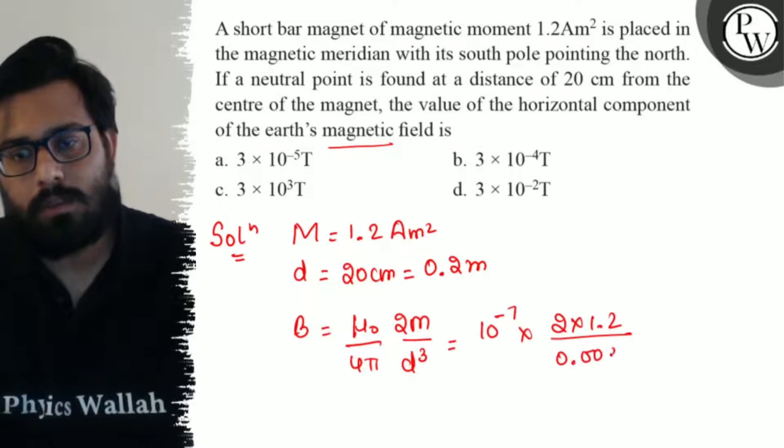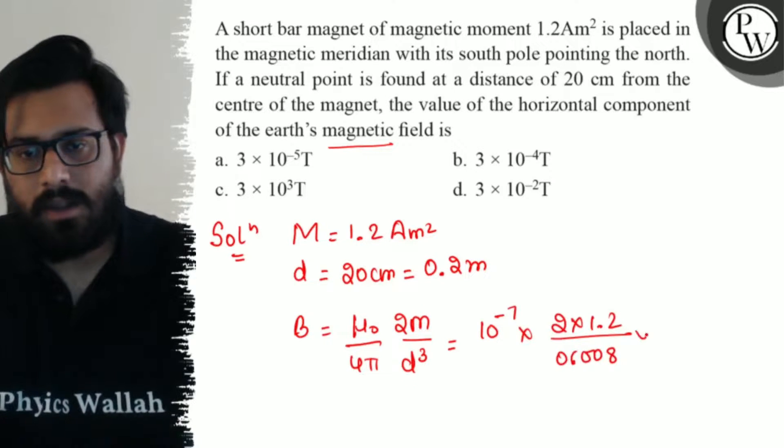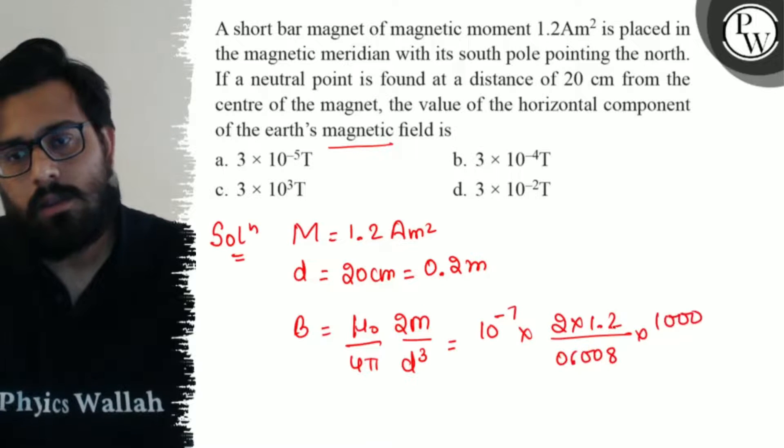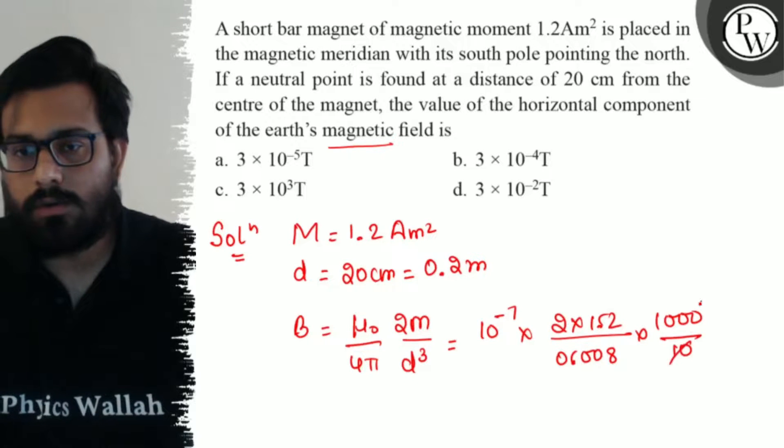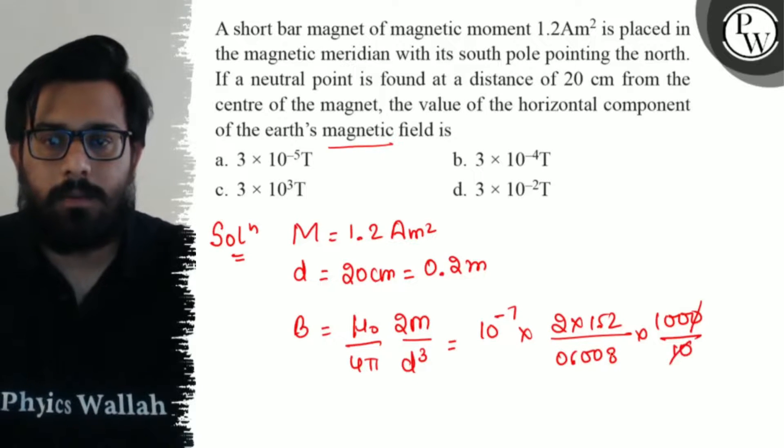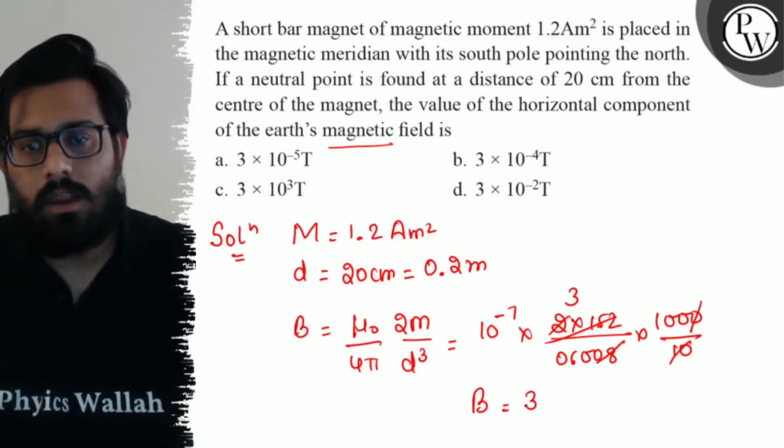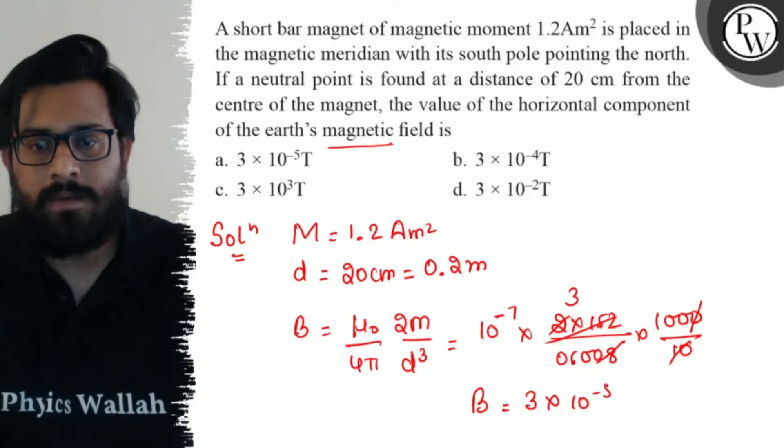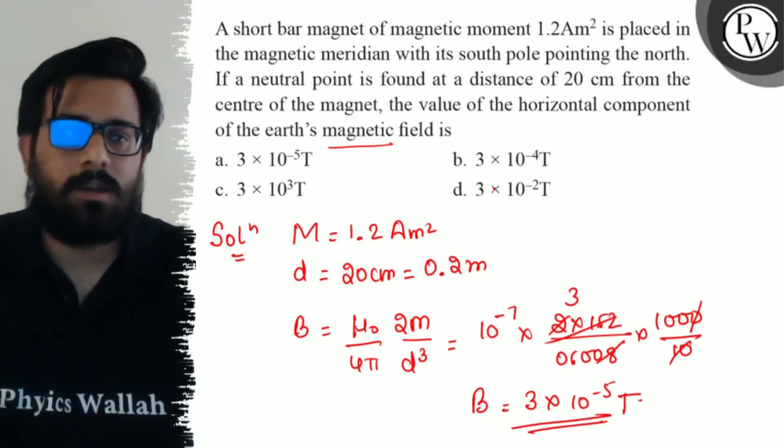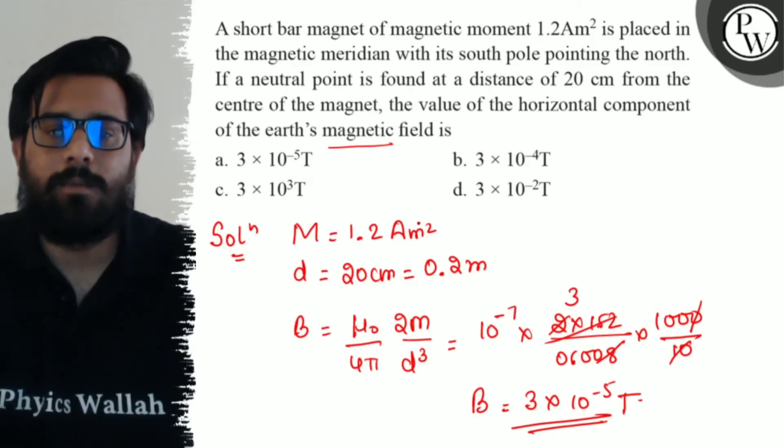Solving this part, the zeros cancel out, and this comes out to be 24 divided by 8, which is 3. So the value of B comes out to be 3 × 10^-5 tesla. So I hope you are getting the concept of this question and the answer is the first option.